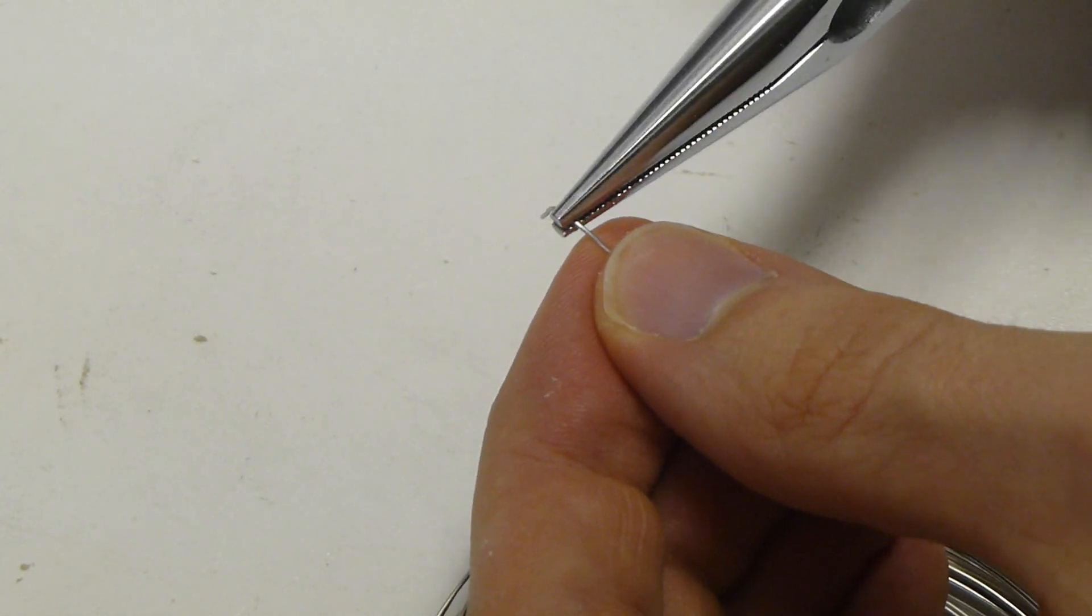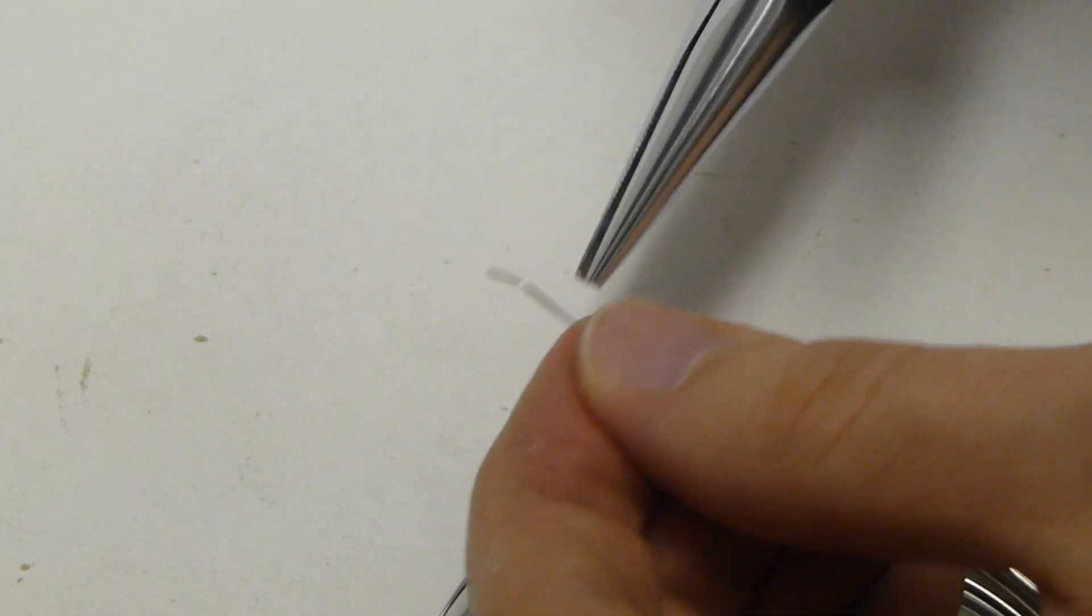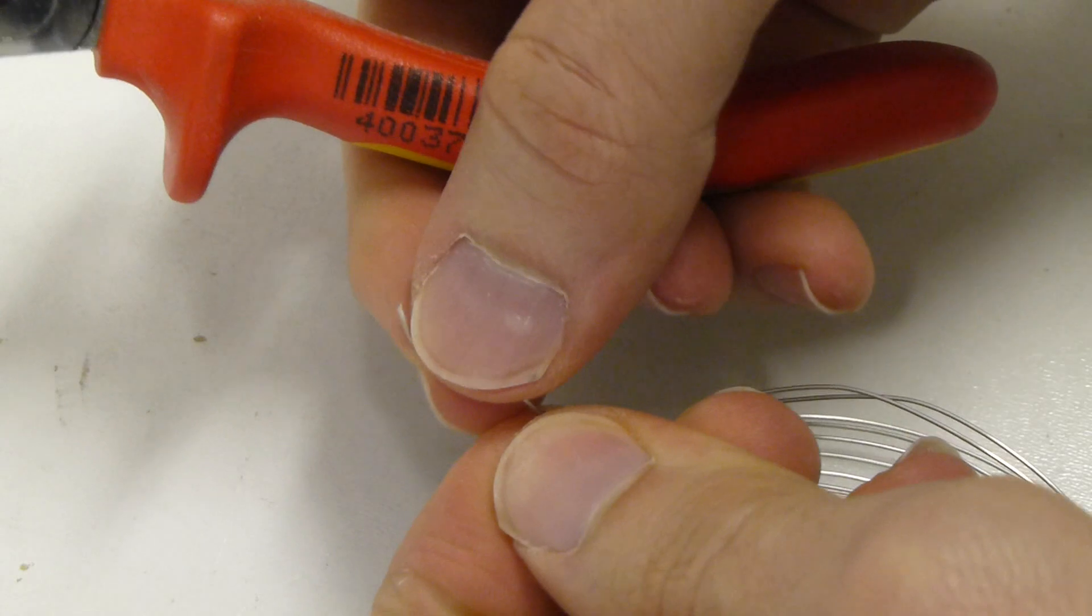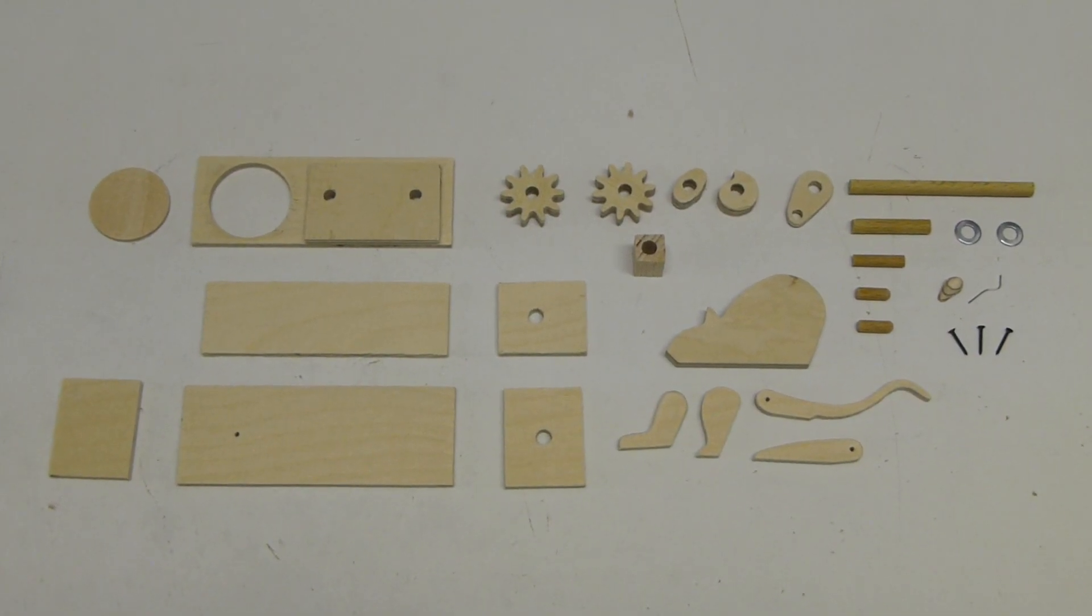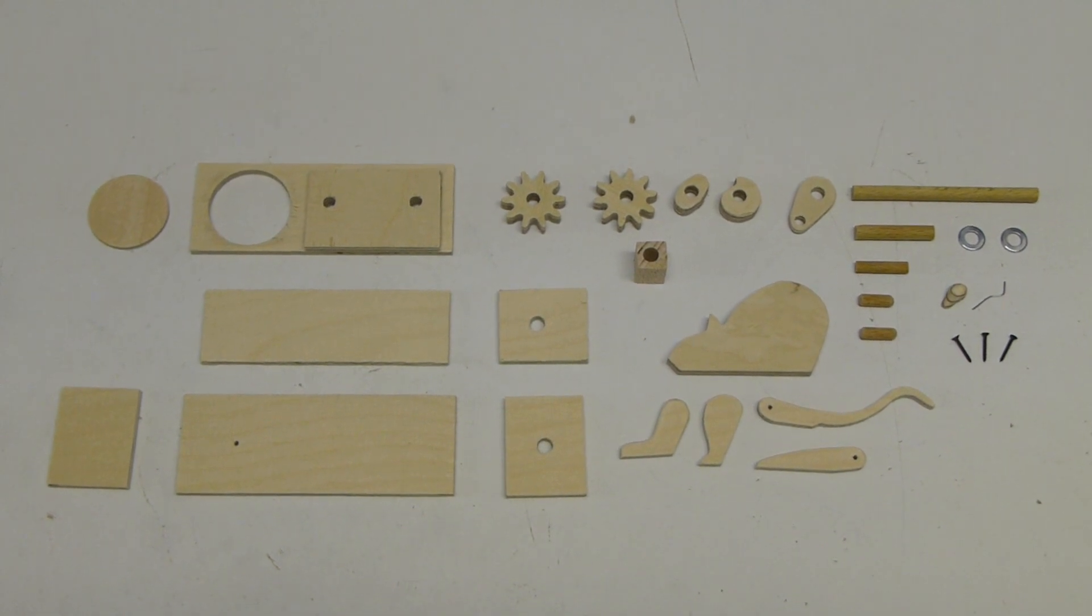Der Mäuseschwanz wird aus dünnem Draht gebogen. Dann sind auch schon alle Einzelteile fertig. Sieht sehr überschaubar aus.